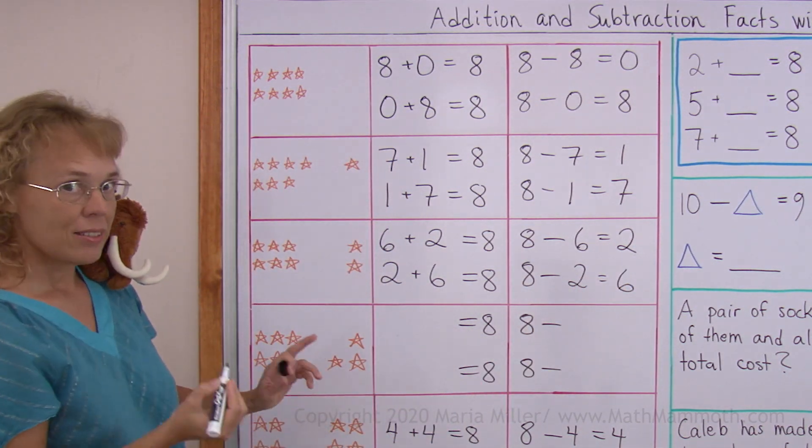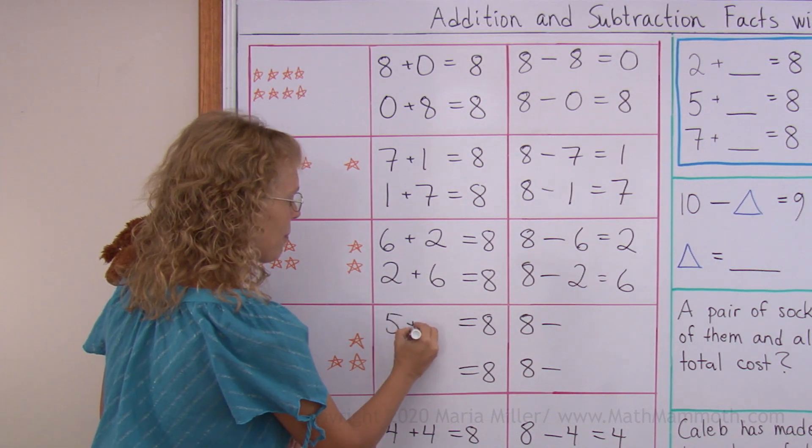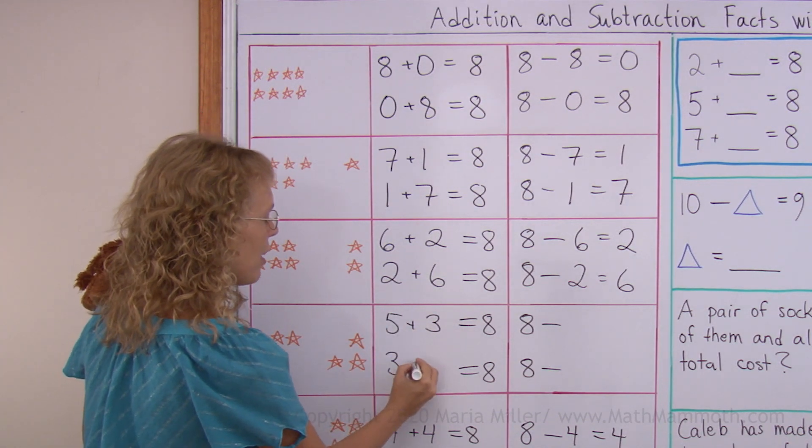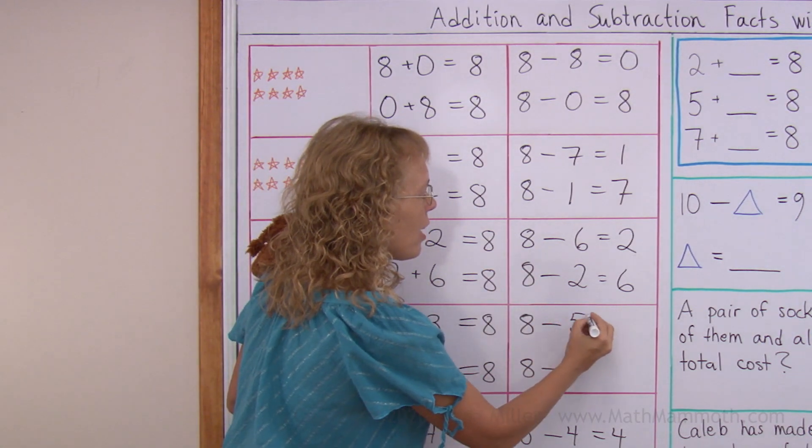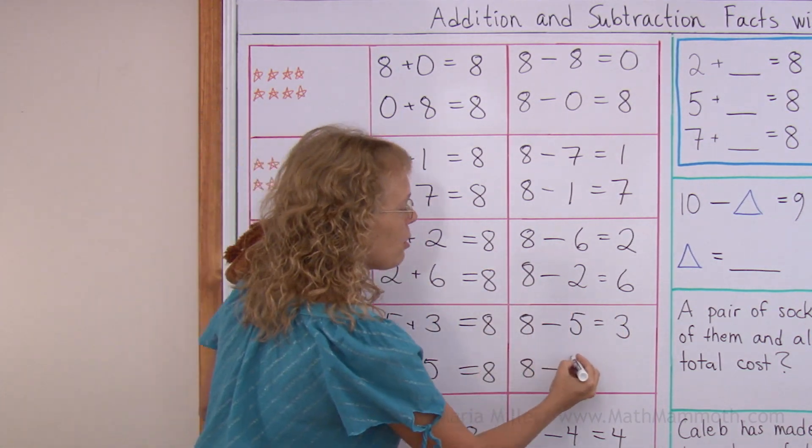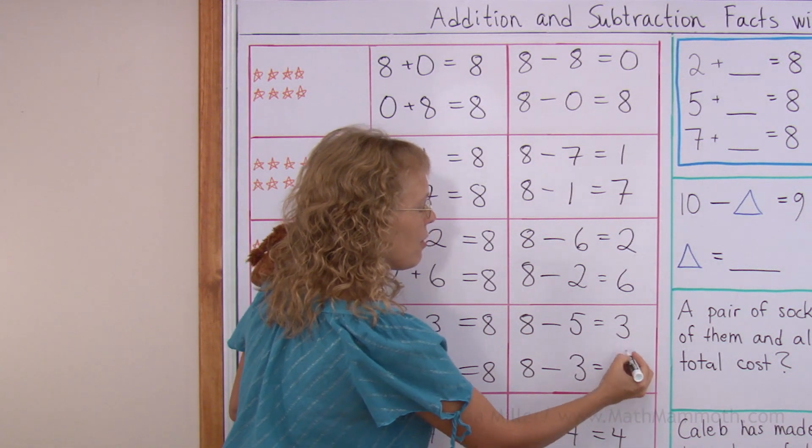And over here, 5 and 3 makes 8, and 3 and 5, and the subtractions 8 minus 5 equals 3, 8 minus 3 equals 5.